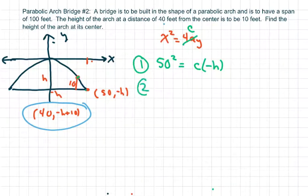Your second equation is going to be 40 squared equals C times your Y, which is negative H plus 10, because we're off balance here when it's 100 feet.